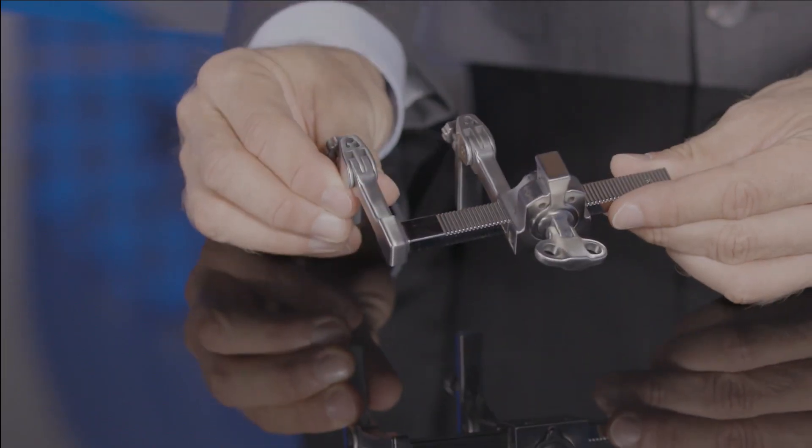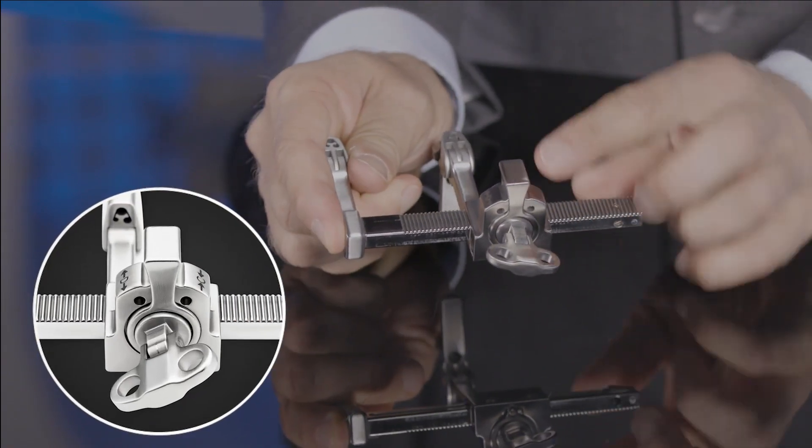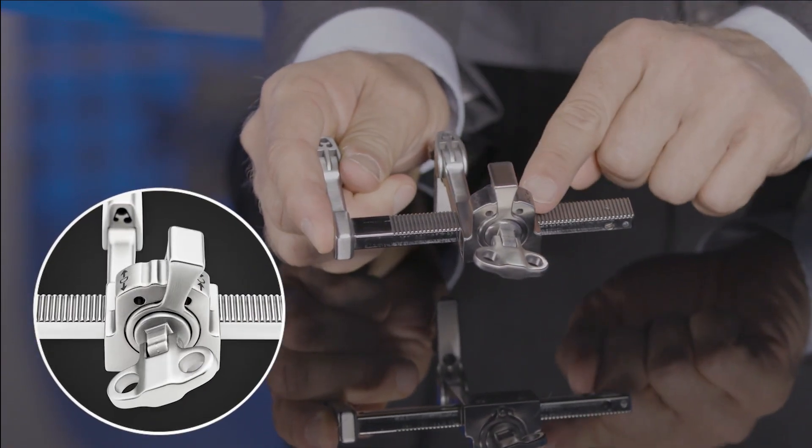The mini joint distractor has a rack and pinion design, and here we see it has three different positions: neutral, distractor, and compression.